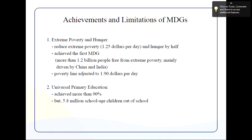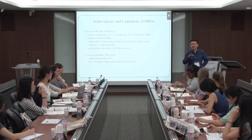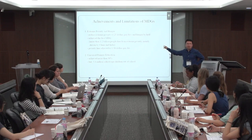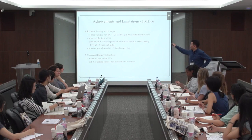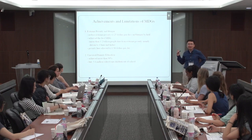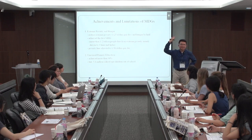Compared to the 1990 baseline, we reduced extreme poverty by half and achieved MDG number one. More than 1.2 billion people were freed from extreme poverty, mainly driven by China and India. However, Sub-Saharan African countries haven't achieved such great success, so there is regional heterogeneity. On average though, we achieved the first MDG.